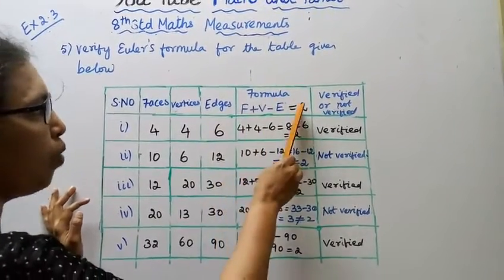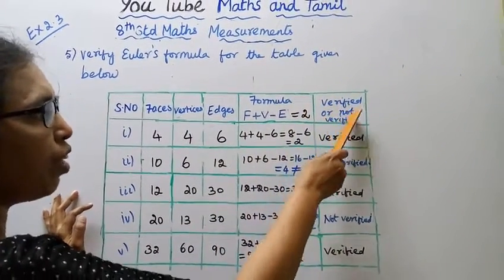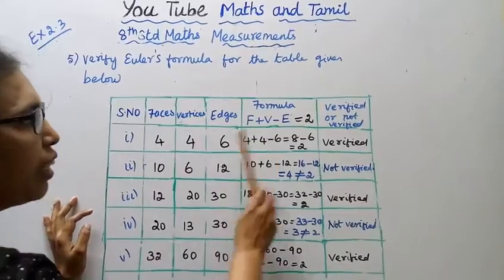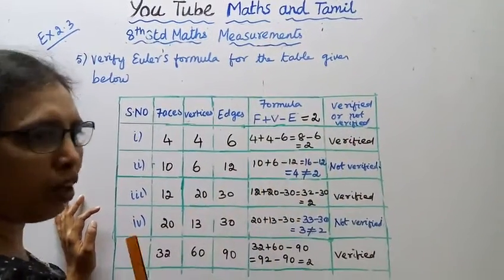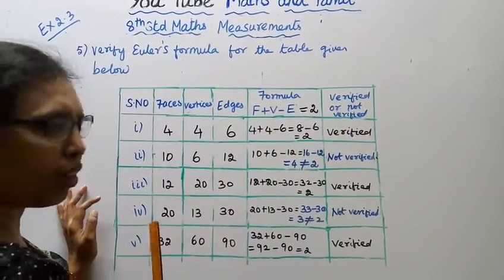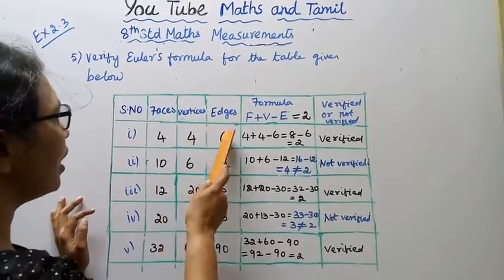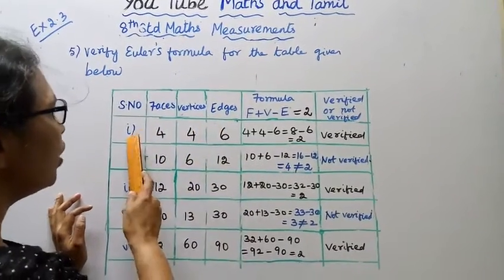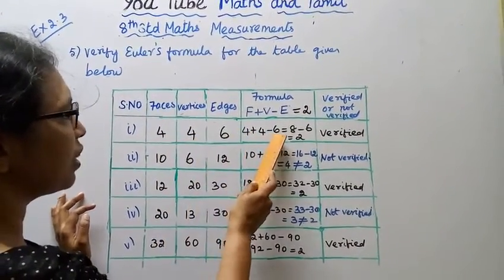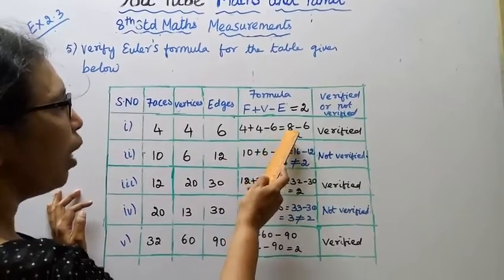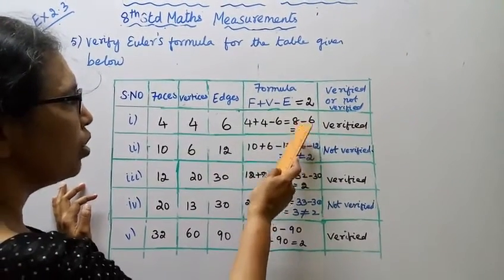We have the table columns set up. For the first entry: faces, vertices, edges — 4 plus 4 minus 6 equals 8 minus 6 equals 2. The answer is 2, so this is verified.